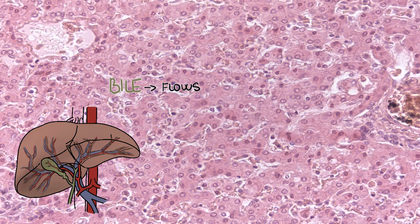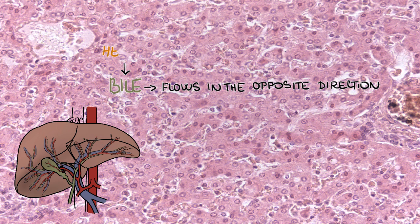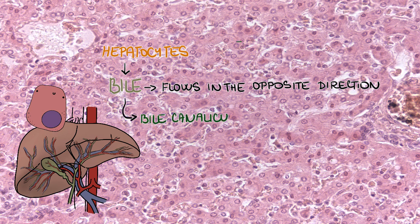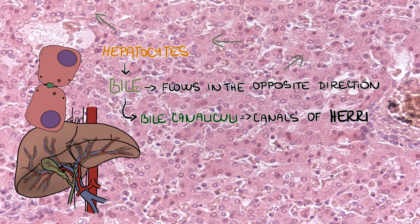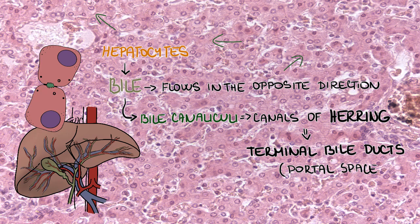The bile flows in the opposite direction. It is produced by hepatocytes into bile canaliculi, which connect to the canals of Hering in periportal regions, and these drain into terminal bile ducts in portal spaces.